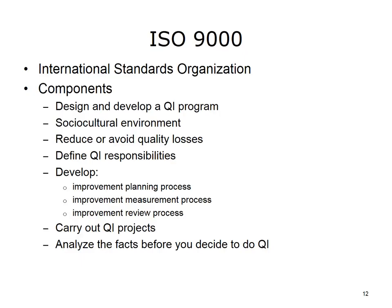The International Standards Organization, in 1987, introduced the initial ISO 9000 guidelines for performance improvement. Components of these guidelines include: design and develop a QI program; create a socio-cultural environment and a structure that supports improvement; reduce or avoid quality losses; define QI responsibilities; develop an improvement planning process; develop an improvement measurement process; develop an improvement review process; carry out QI projects; and analyze the facts before you decide to do QI.